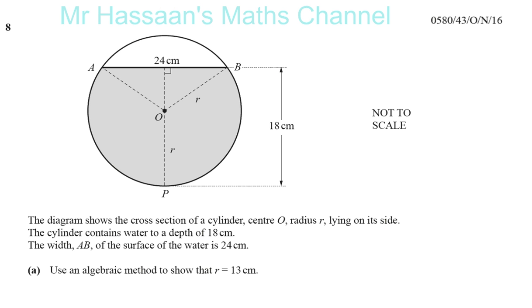In this question, it tells us - let's see what they tell us. The diagram shows the cross-section of a cylinder, center O, radius R, lying on its side. So it's like you've got a cylinder lying down on its side, like a Pringles packet. And it's like you're looking at it from straight ahead. So you're looking at the lid or the base of the packet. This is called the cross-section, the part of the shape that stays the same all the way through. So this is the cross-section of the cylinder.